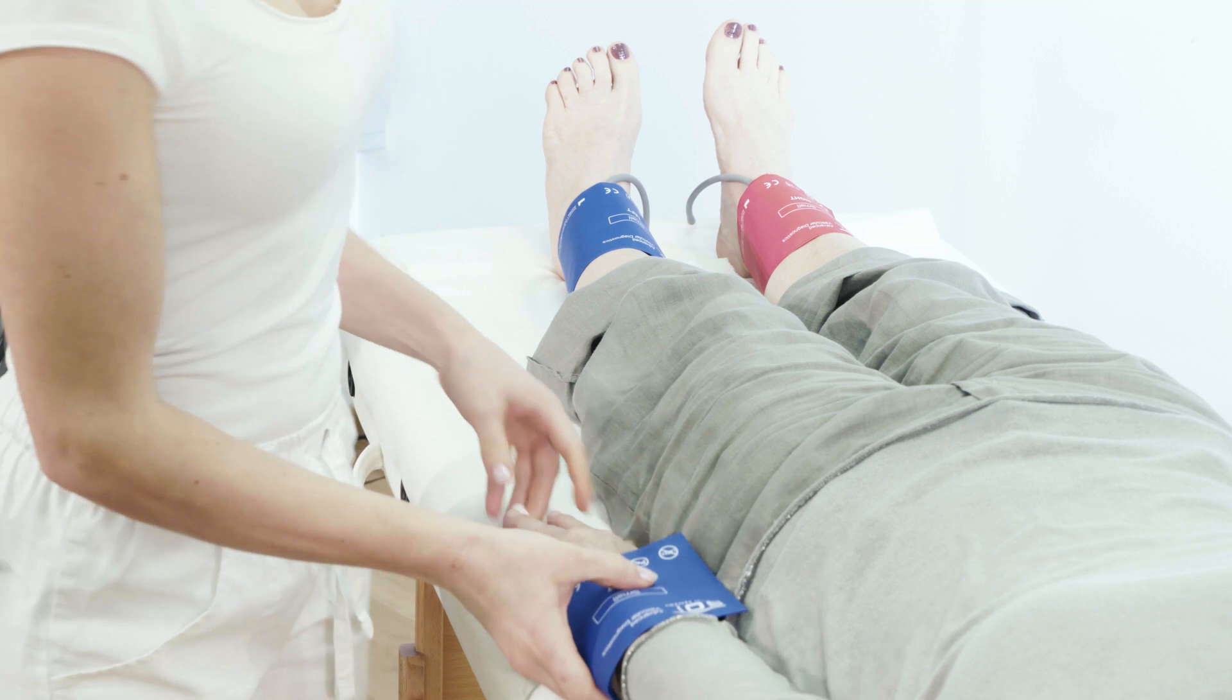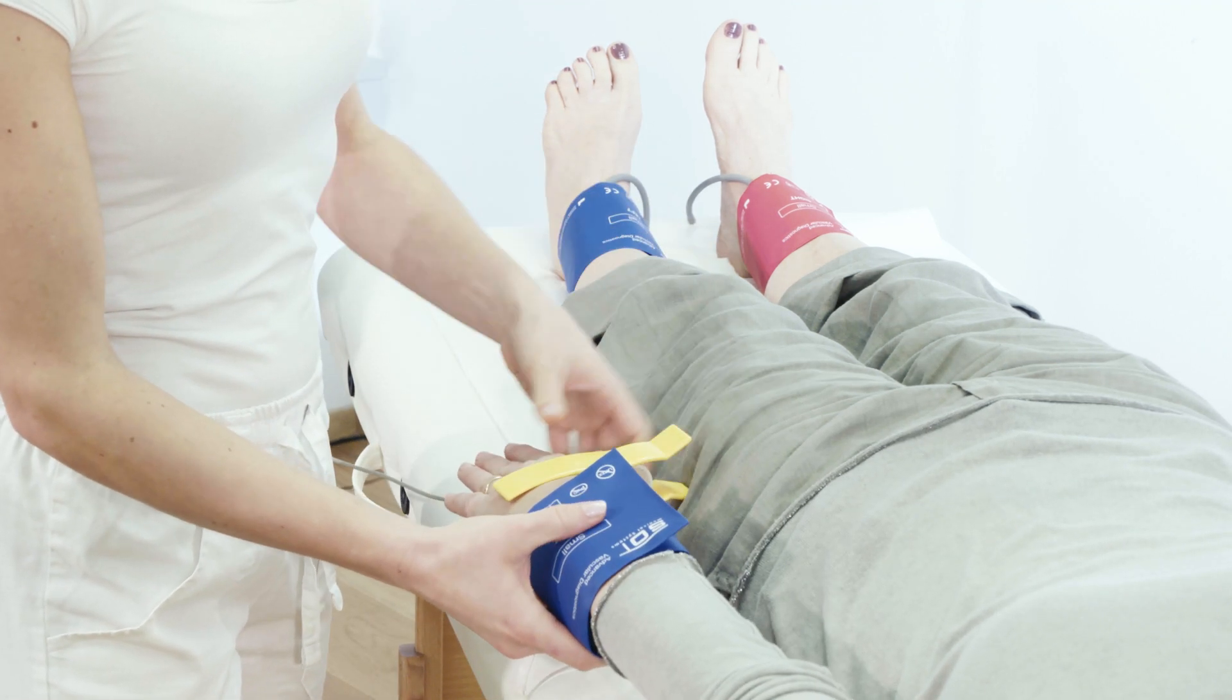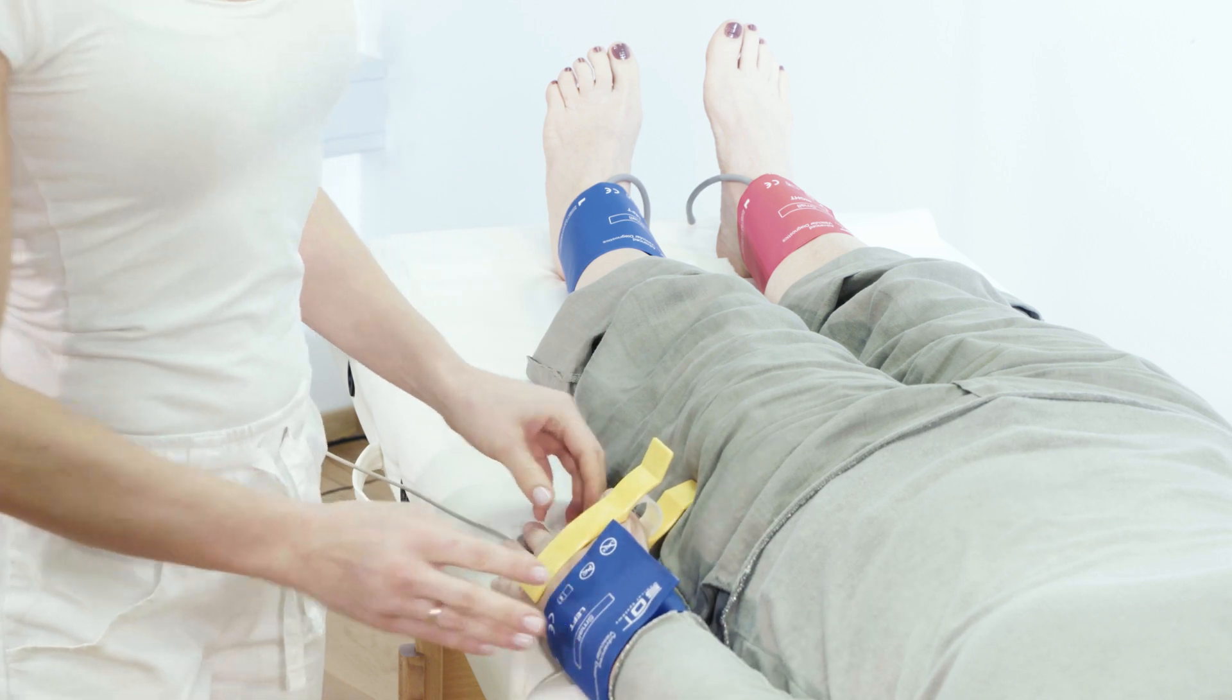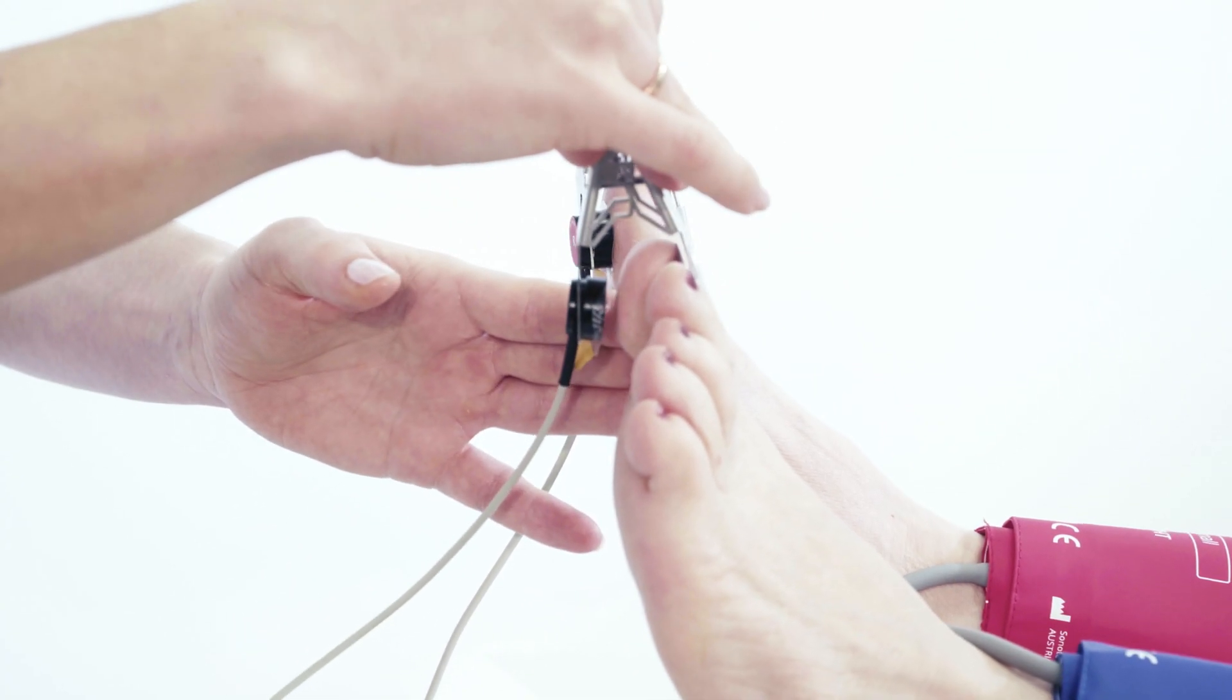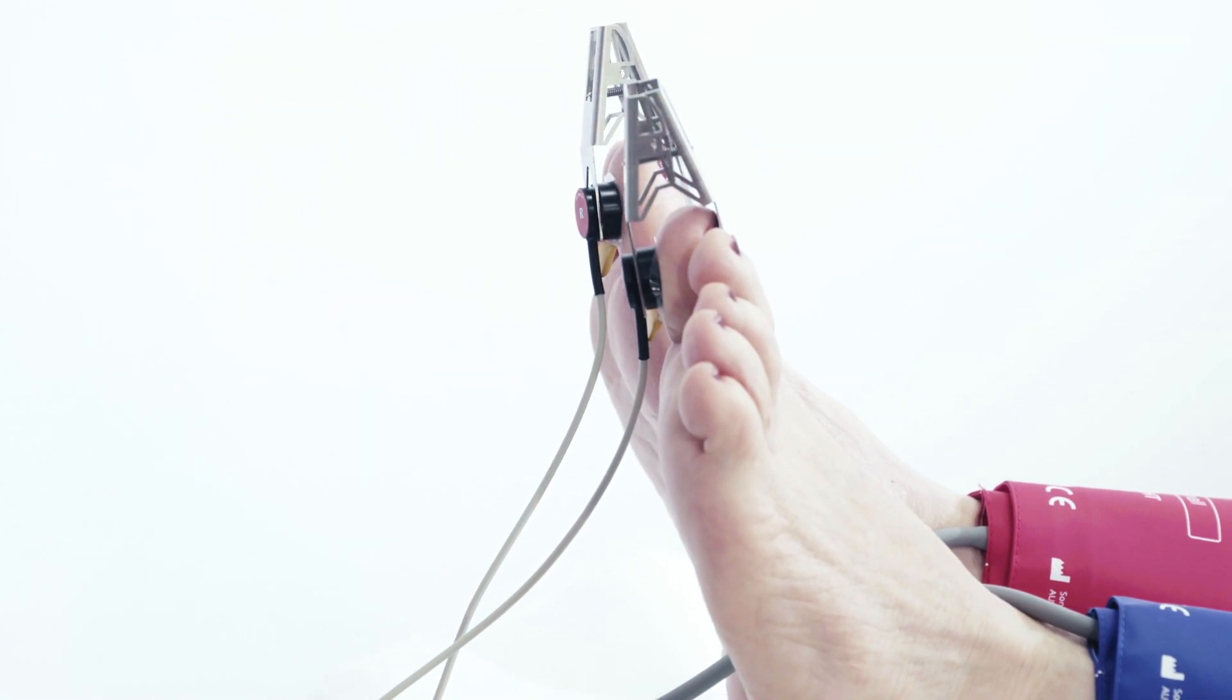The H-top measurement can be performed in a few steps without significant stress for the patient. After attaching the cuffs to the wrists and ankles as well as the optical sensors on the toes and the ECG clamps on the hands,